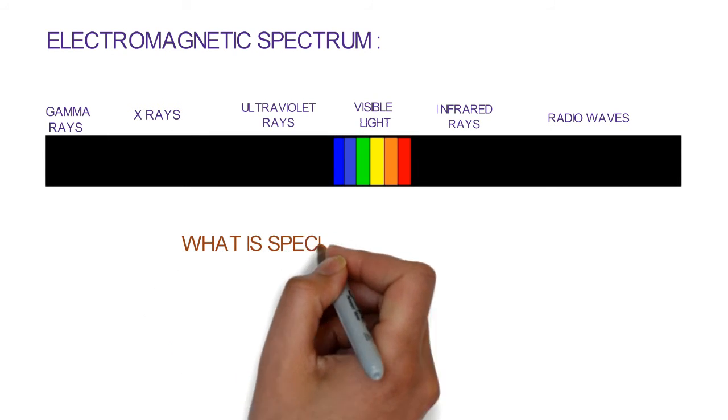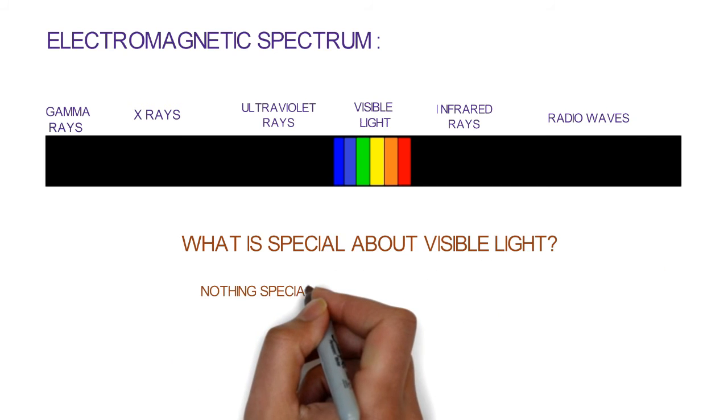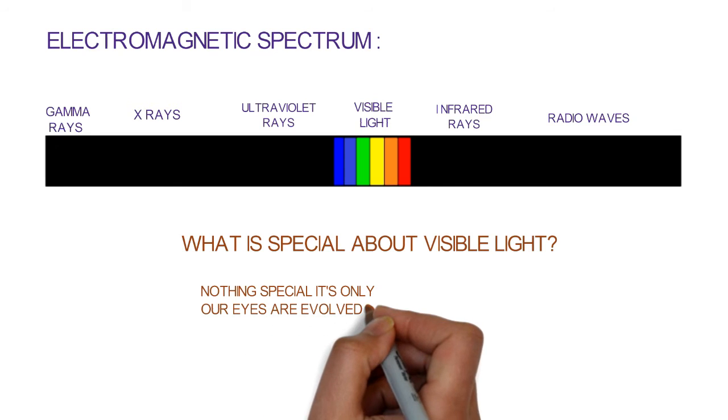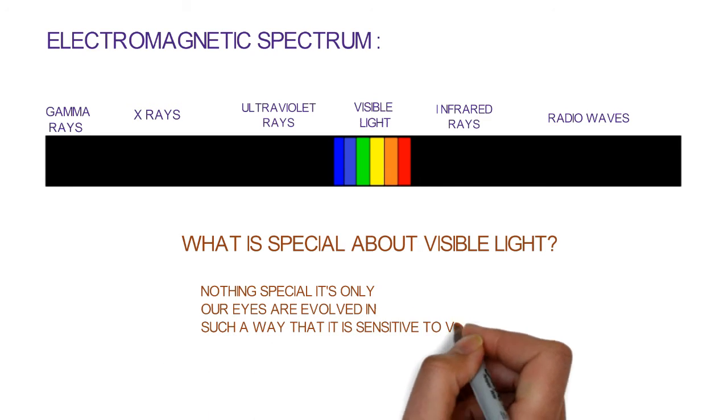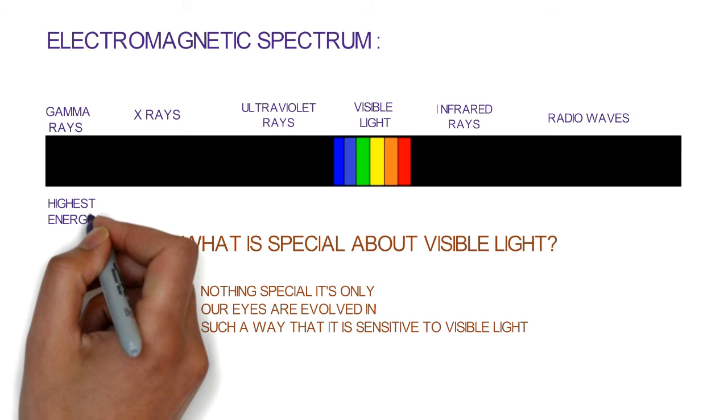Then what is so special about visible light? Nothing special - it's only that our eyes evolved in such a way that they are sensitive to visible light. Gamma rays have the highest energy and radio waves have the lowest energy in the electromagnetic spectrum.